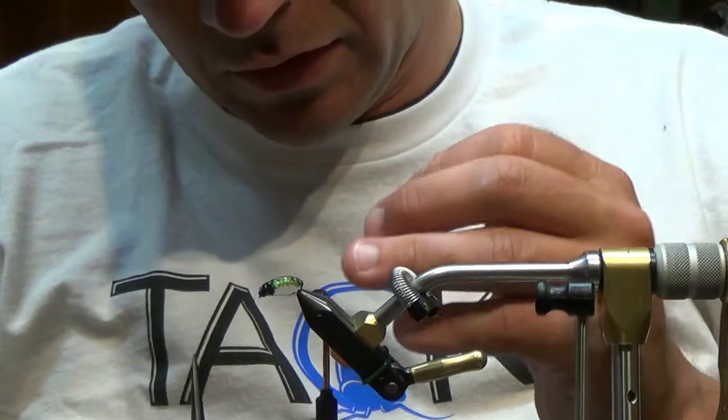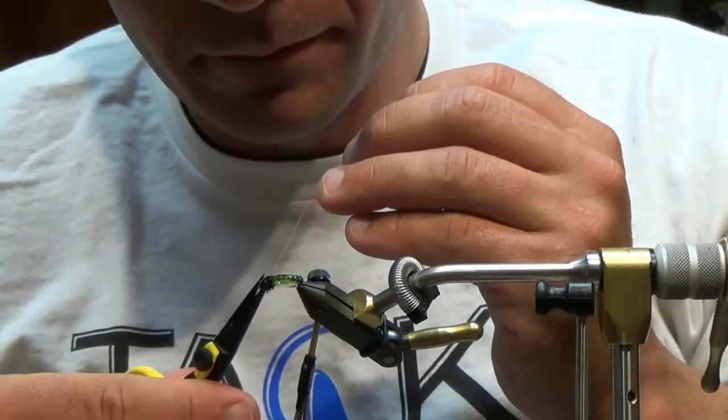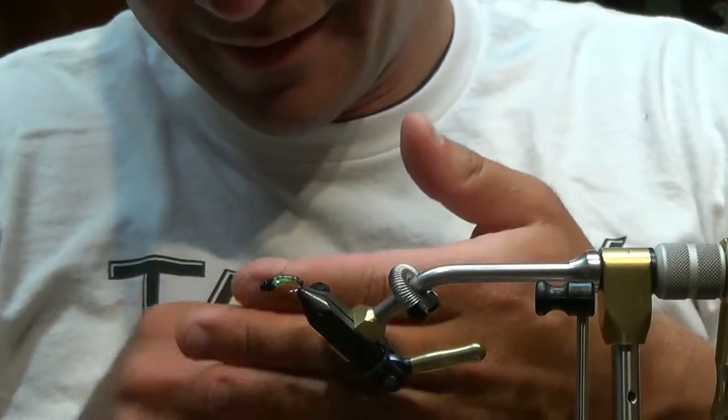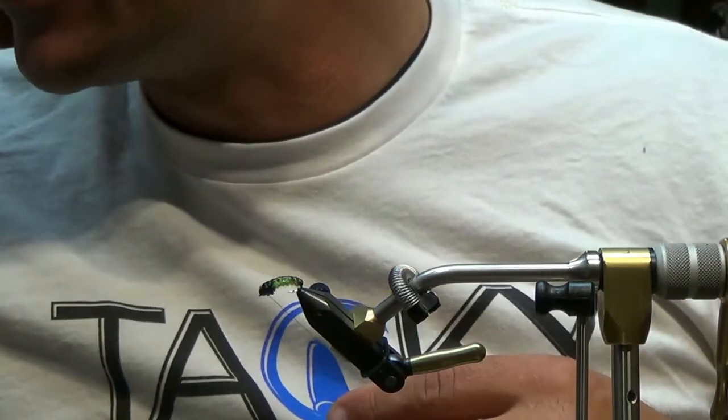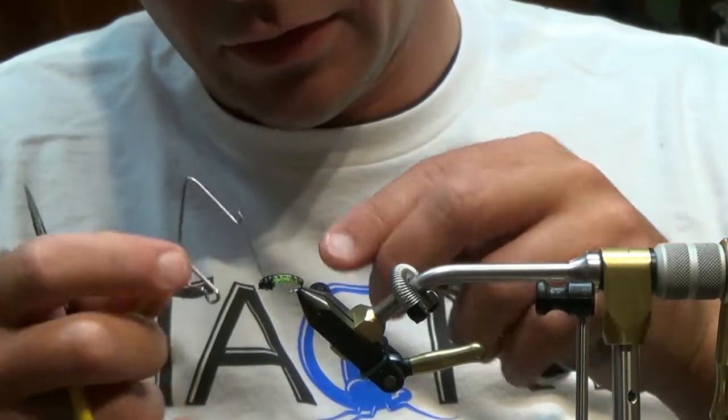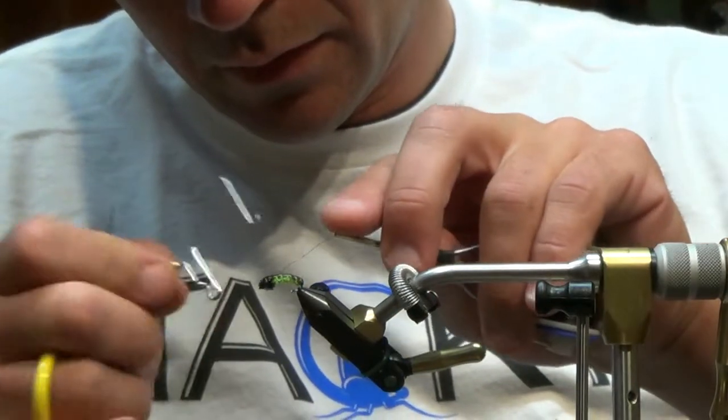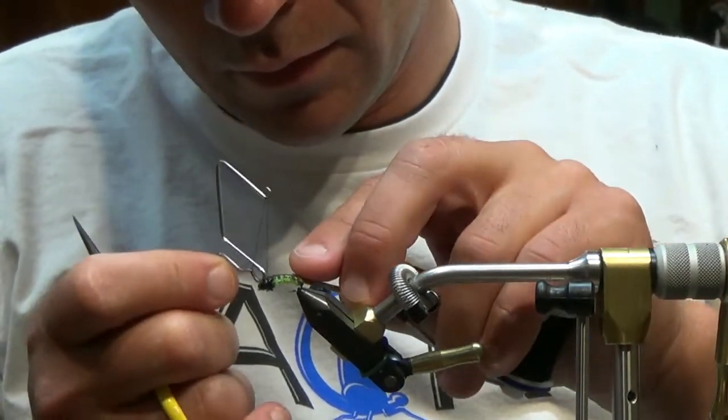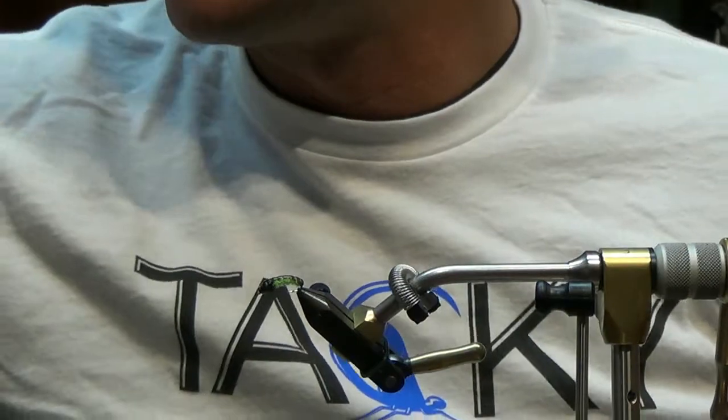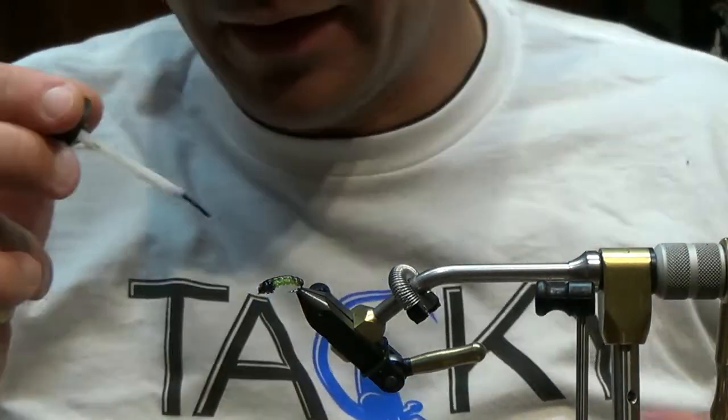Just finish this off. Cut your tippet and then right behind the bead a quick whip finish. Trim your thread, dab of glue, you're set. Like I said, very simple, very quick pattern to tie.